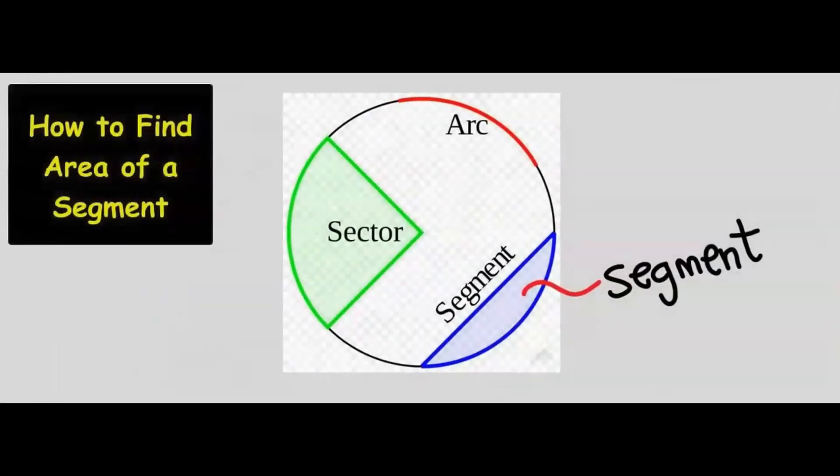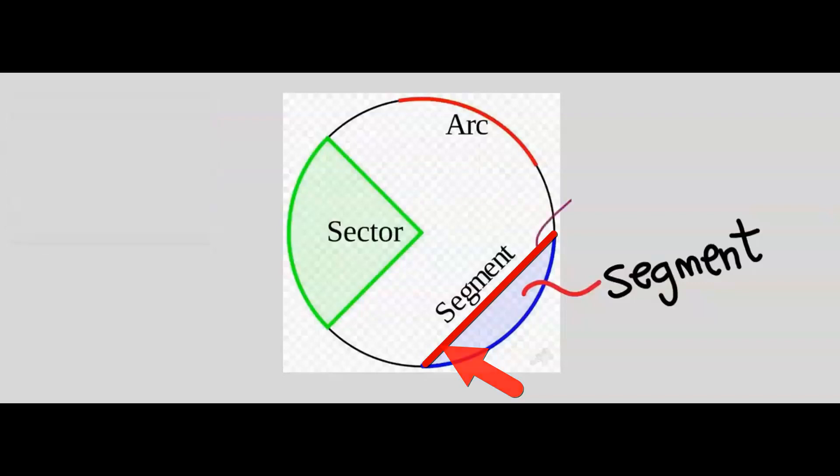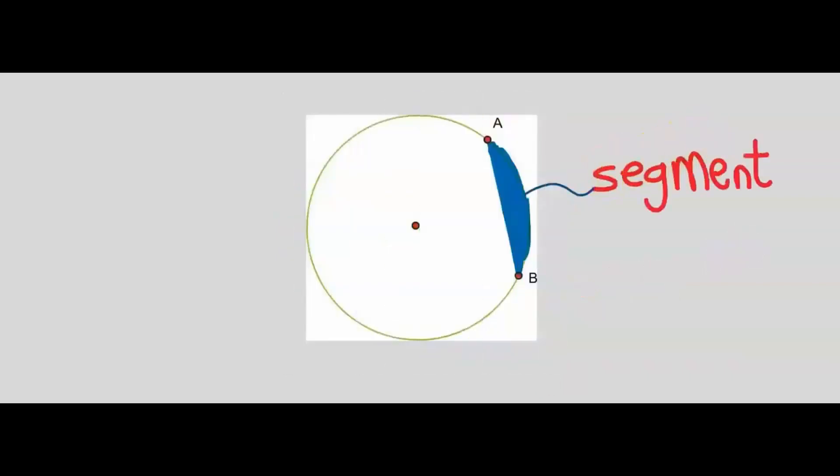Let's consider how to find the area of a segment. This line is known as a chord and the shaded portion is known as a segment. Usually within a circle, a segment is inside a sector.